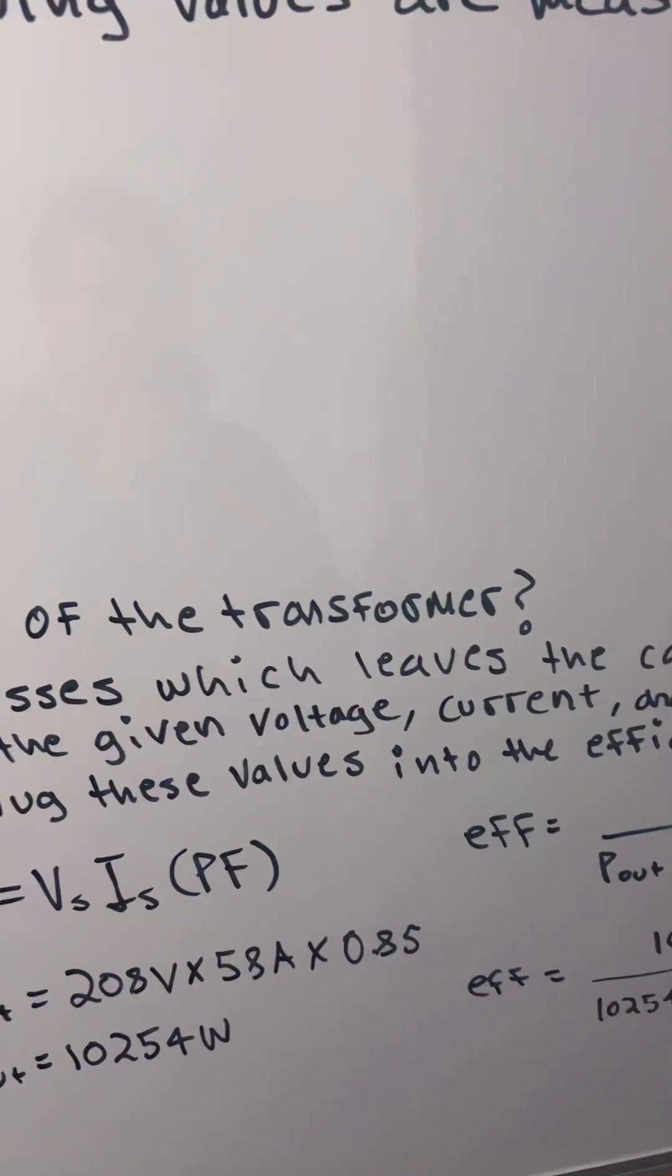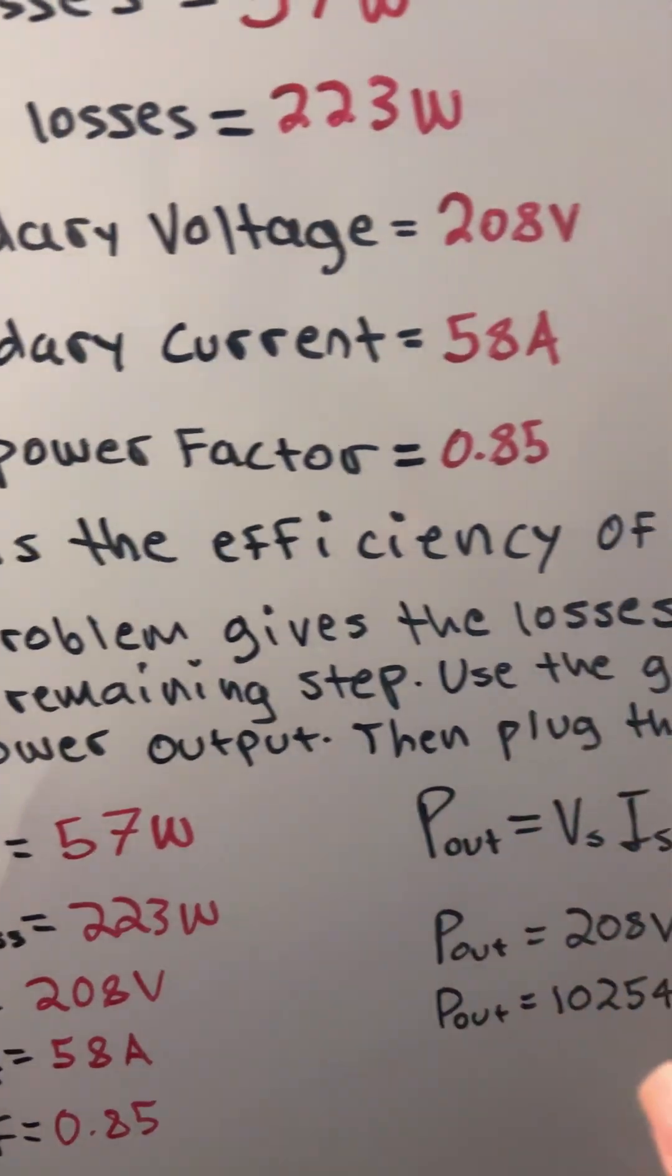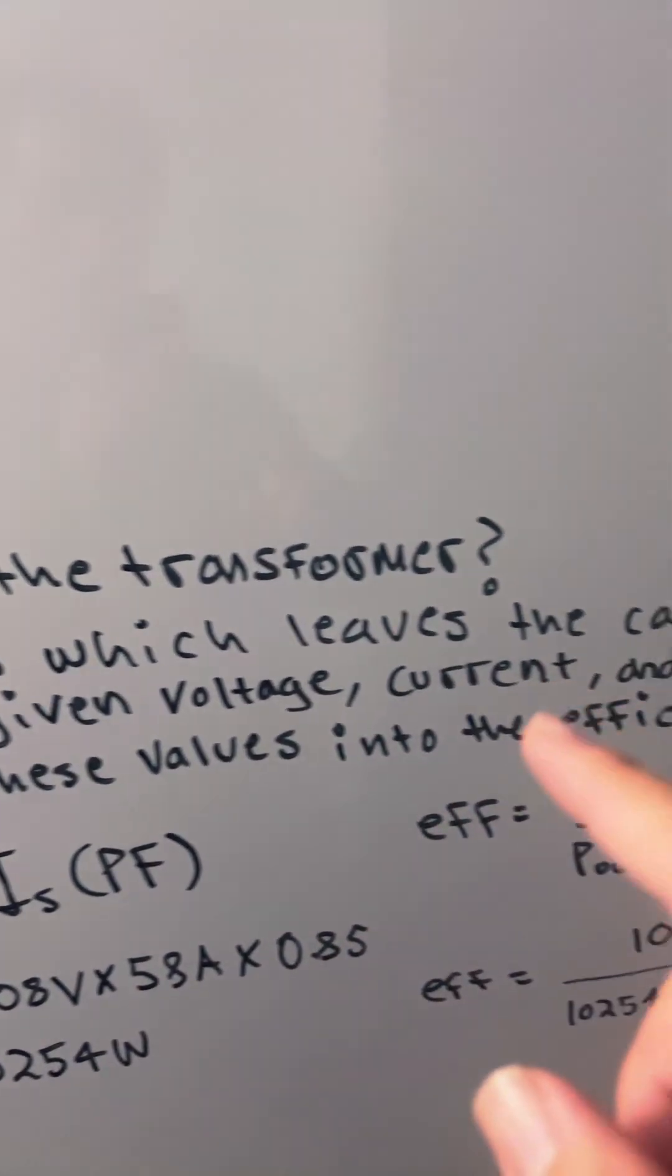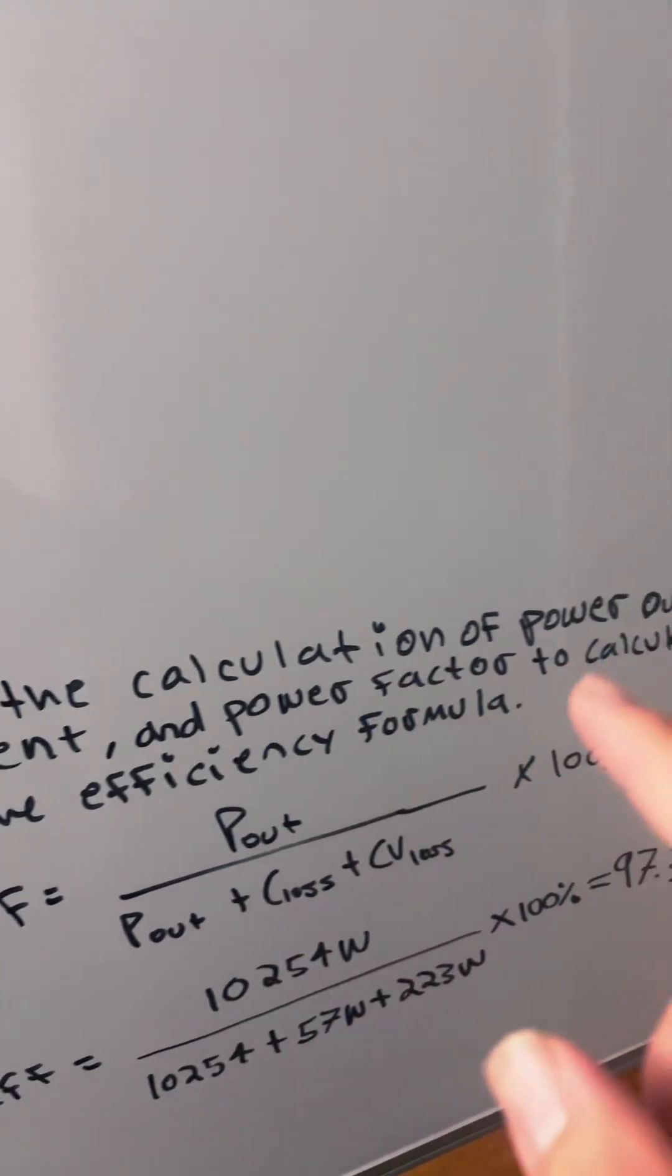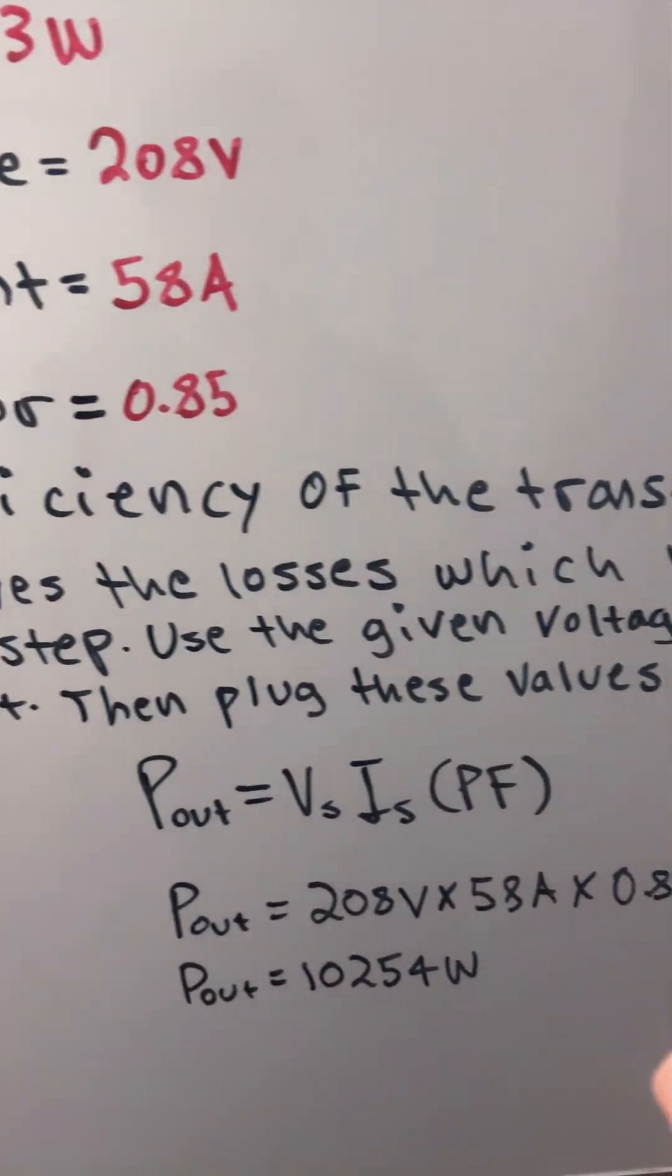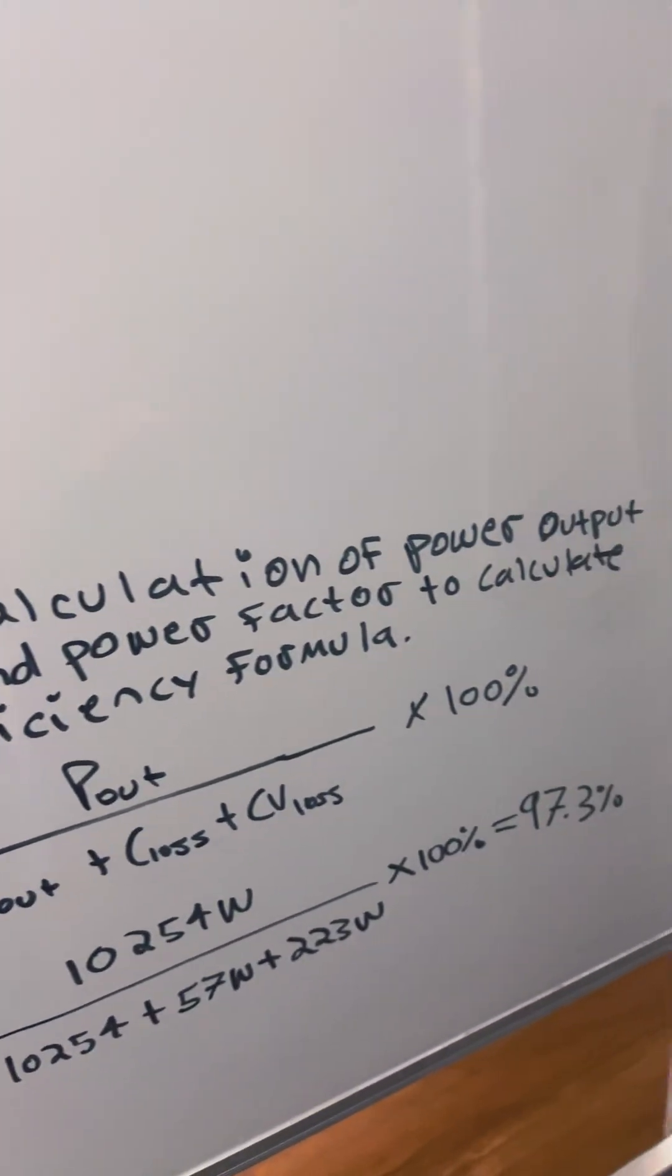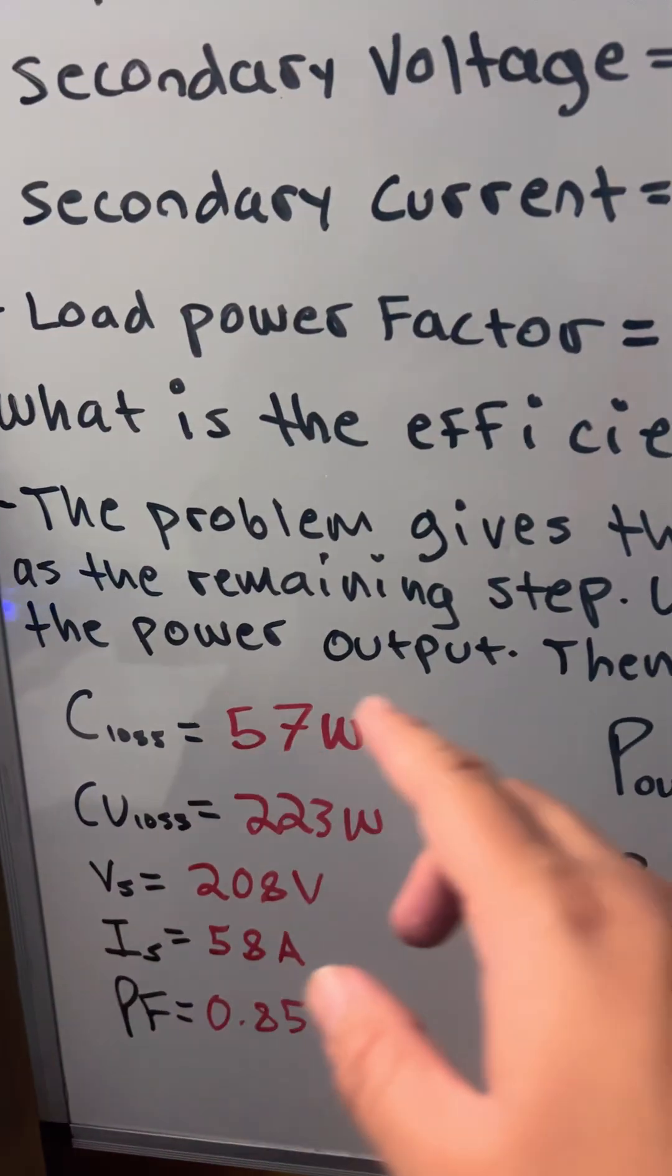The problem gives the losses, which leaves the calculation of the power output as the remaining step. We're going to use the given voltage, current, and power factor to calculate the power output.